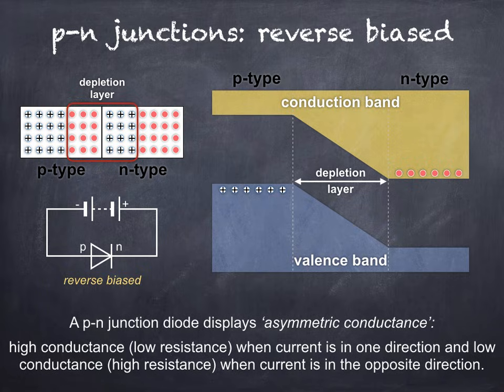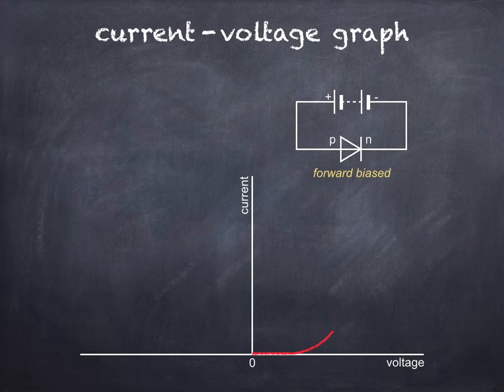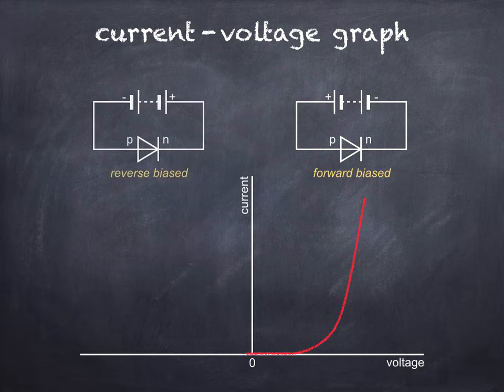This can be seen in the following graph of current against voltage. When forward biased, the supply voltage has to increase above the junction voltage before there's any noticeable increase in current as the forward biased P-N junction conducts. When reverse biased, as mentioned earlier, the current is extremely small and the P-N junction is effectively acting as an insulator.